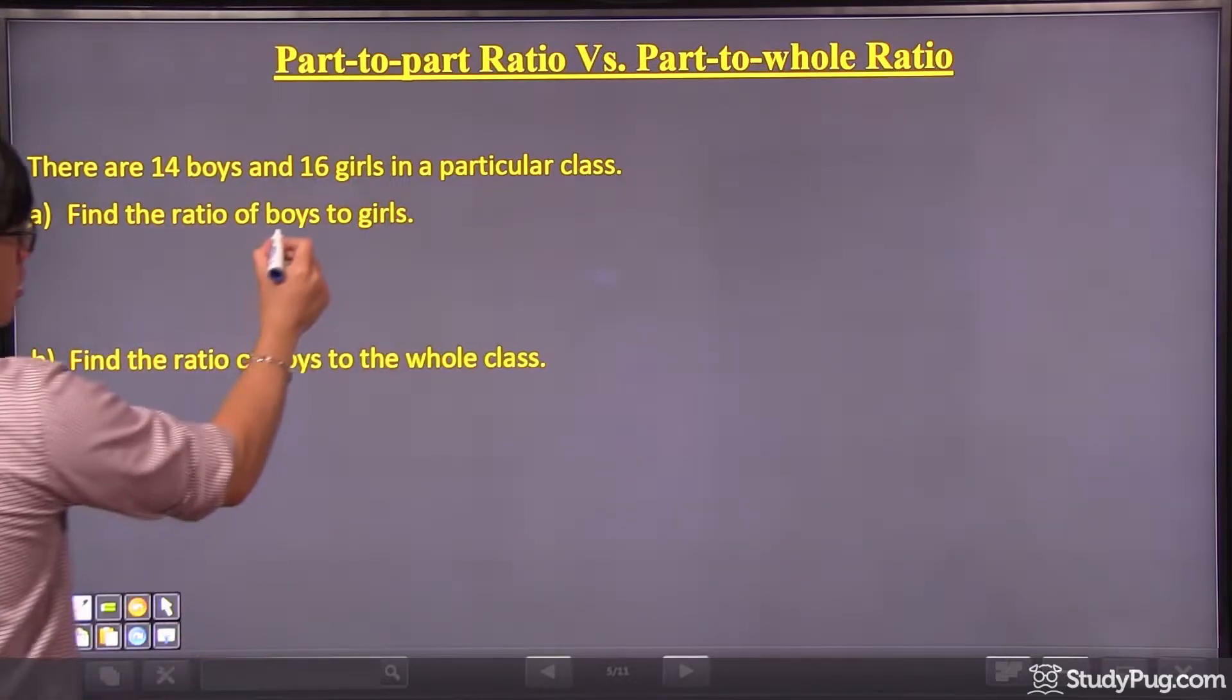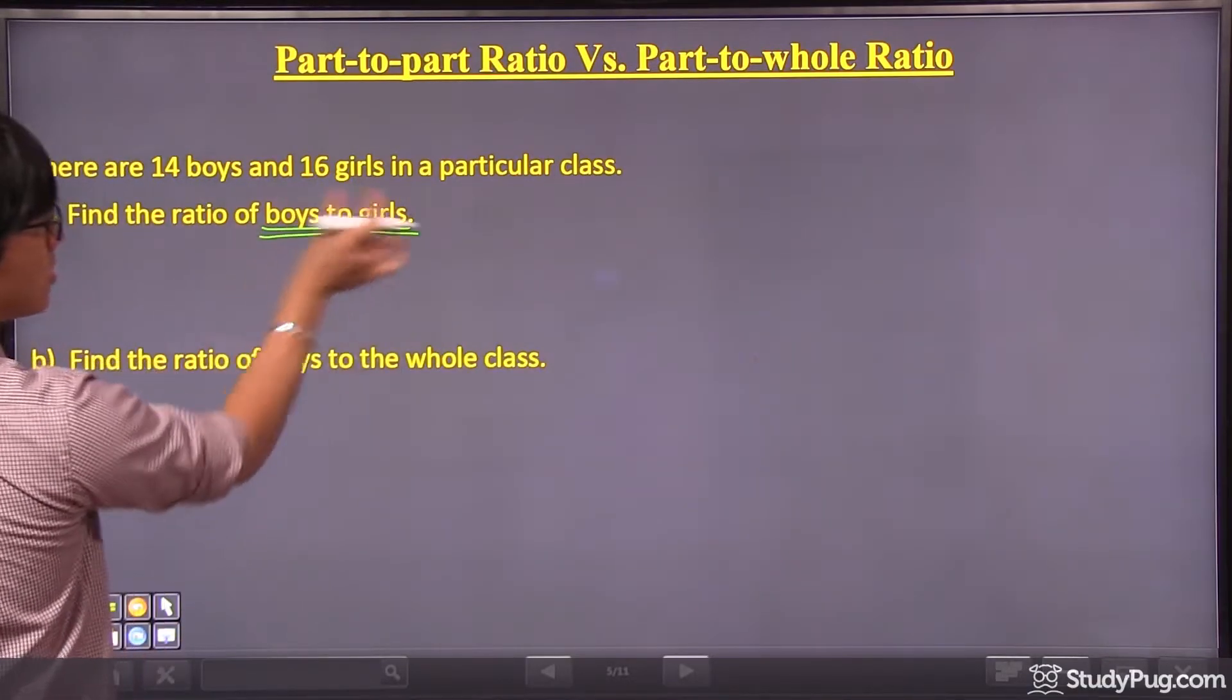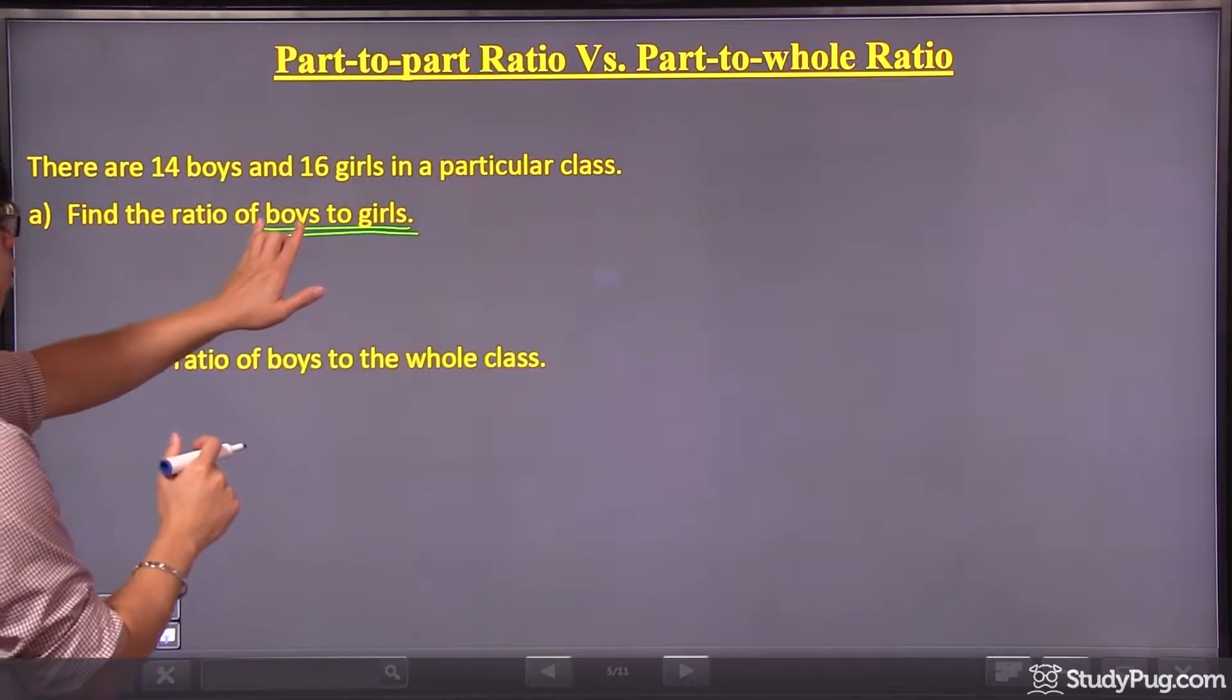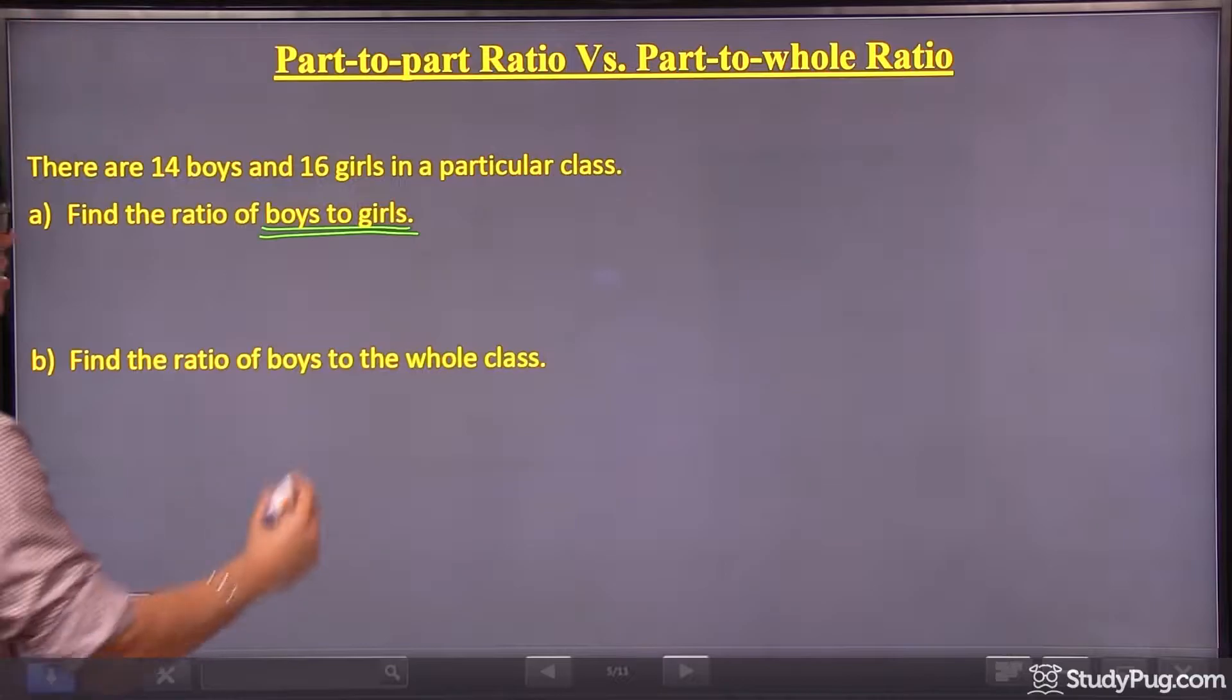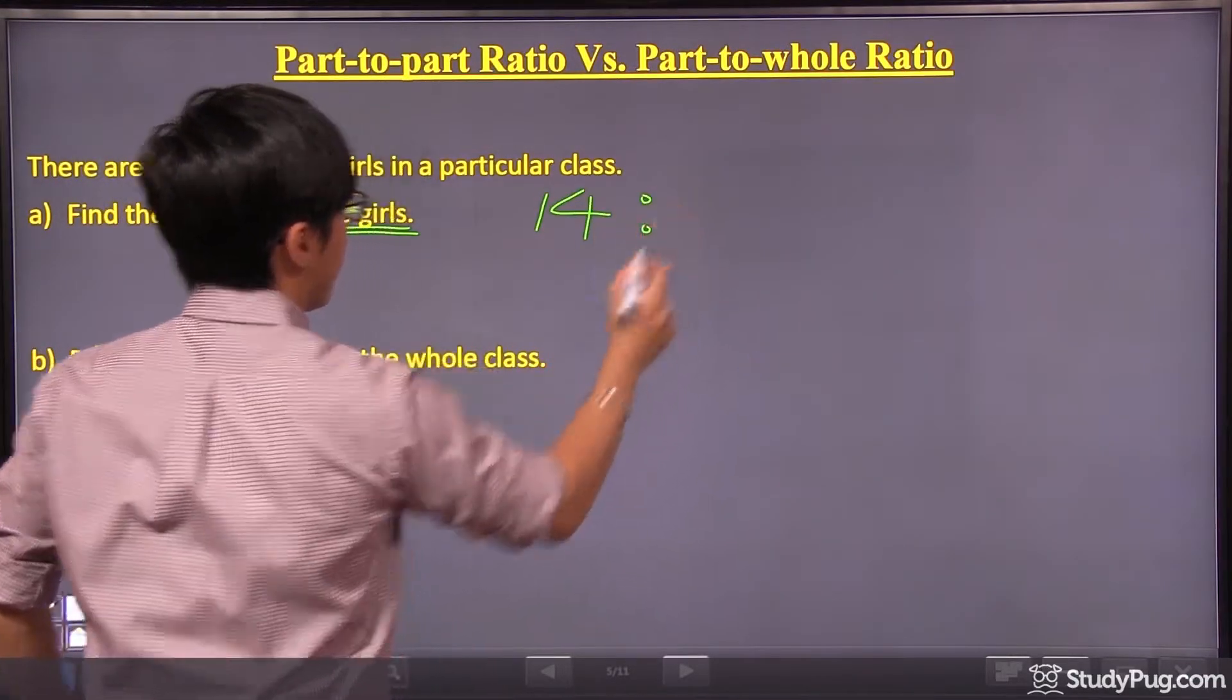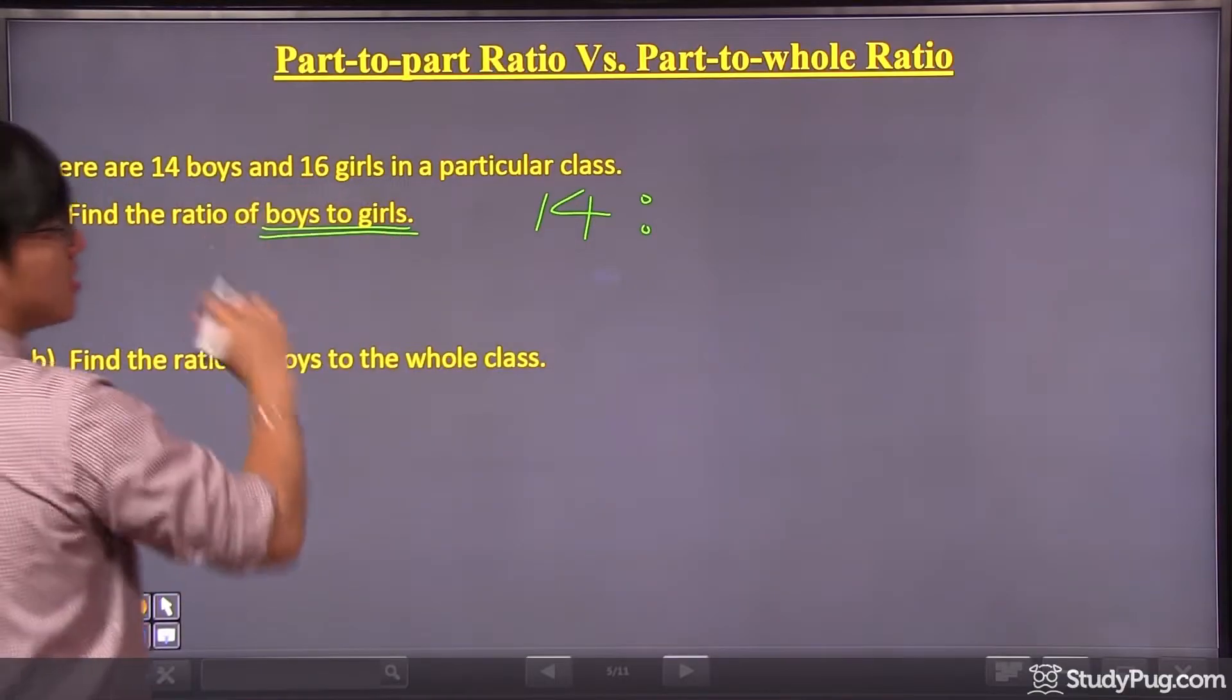Okay, so we want to find a ratio showing boys to girls. Alright, so this one's really easy because boys is just 14, so we have 14. As for girls, we have 16.